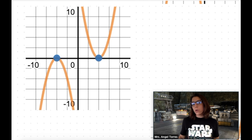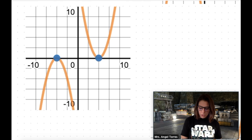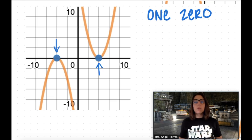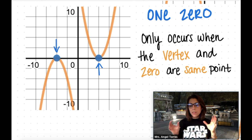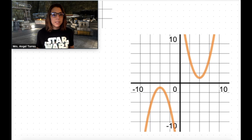The second scenario when you have a parabola in a quadratic function is that your parabola only crosses the x-axis in one unique spot. That would mean that these parabolas have one zero, only one x-intercept. Now this only occurs when the vertex and the zero are the same point.